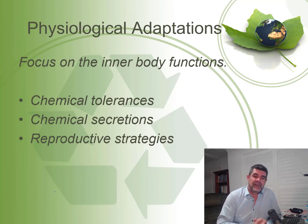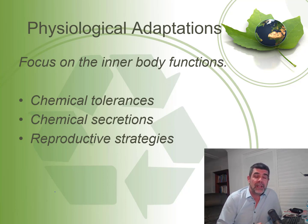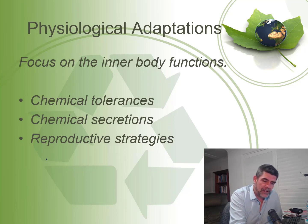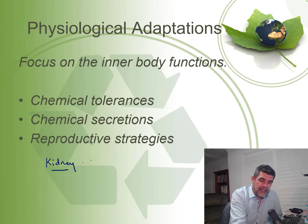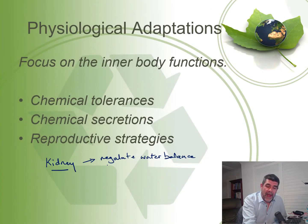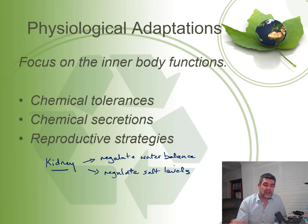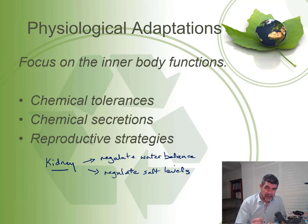We need to look at a couple of different examples in the areas of chemical tolerances, chemical secretions, and reproductive strategies — where the way the body is working gives us clues to the physiology involved. For example, if we looked at an organism that had a kidney — a kidney is actually a structure, so the presence of kidneys gives us a structural adaptation. However, if the kidneys function to regulate water loss or salt levels, both of these are physiological functions — they're how the body works.